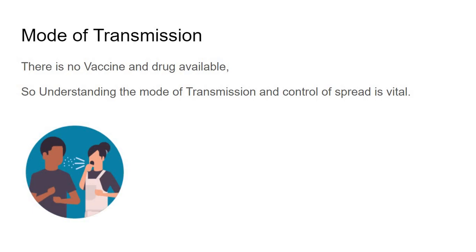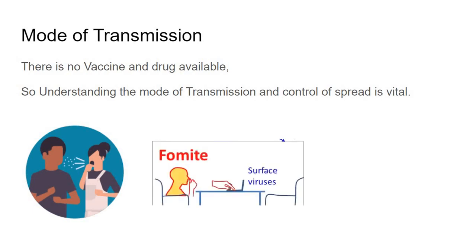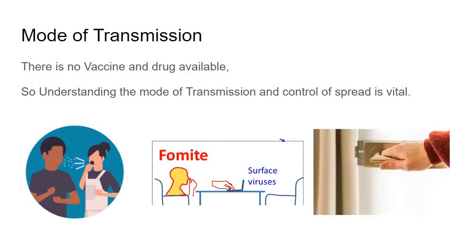COVID-19 is a respiratory disease that transmits by respiratory droplet nuclei. It can directly spread from the cough of one person to another, or through fomites — a person who is coughing touches their hand, then shakes hands with another, or touches surfaces like laptops, door handles, taps, rails, or lift buttons. The virus survives for days on surfaces, which makes it more contagious.